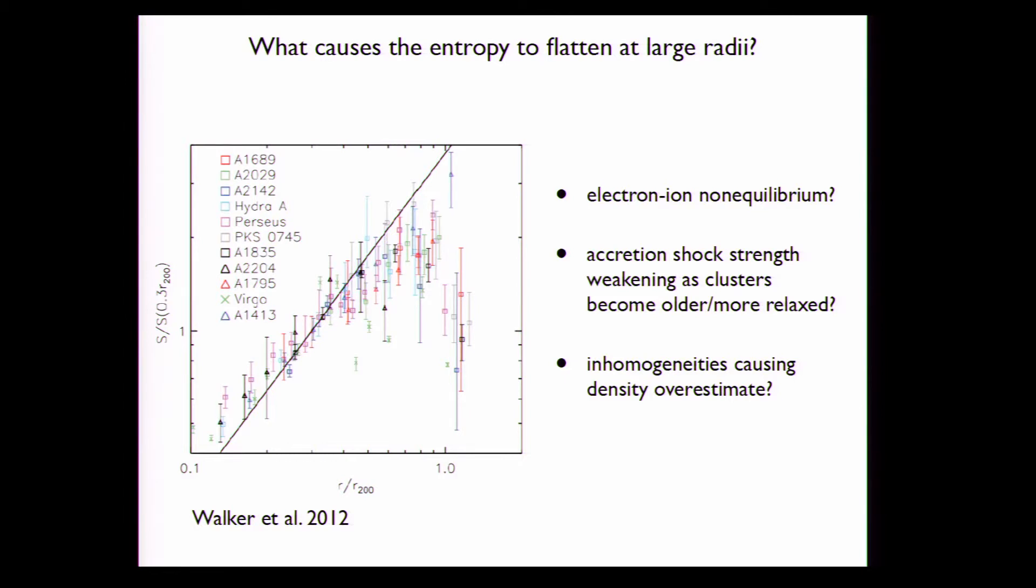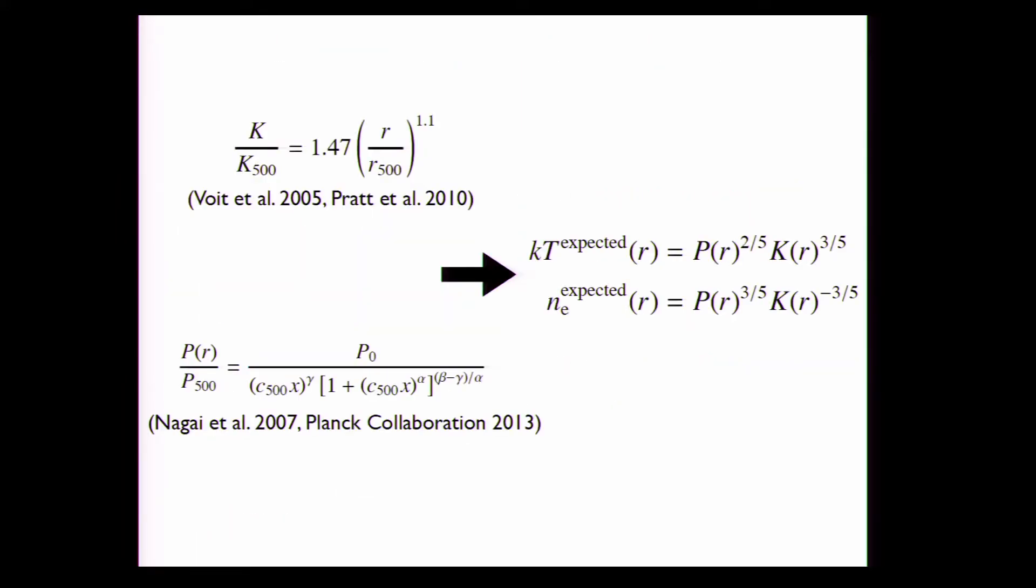The question is what actually causes the entropy to flatten, and there have been several explanations proposed. Some people said the temperature is actually too low because you're measuring just the electron temperature, and the electrons and ions are not in equilibrium. Other people have said if you have relaxed cool core clusters, the accretion shock is going to get weaker as the cluster gets older, and that makes the entropy profile to dive down. The other explanation is if the density here is not homogeneous, then you're not measuring the right density from the x-rays, and that will cause the entropy to do the same thing. So the question is: are we measuring the wrong temperature, are we measuring the wrong density, or are we measuring the wrong both of those?